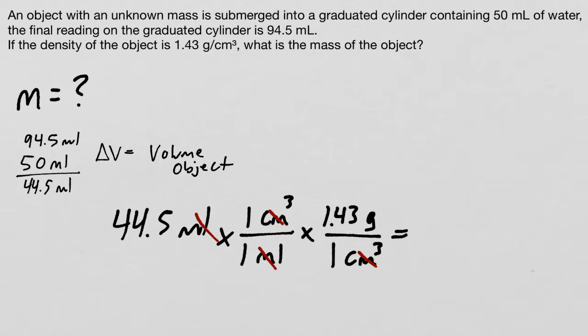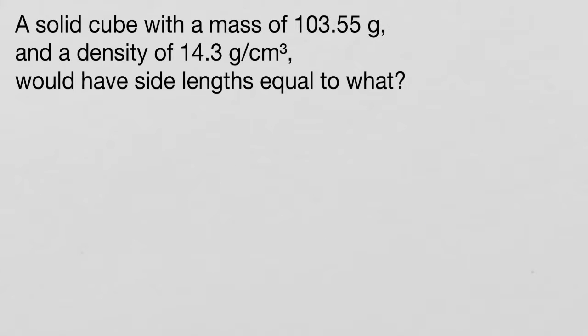The mass of the object is 63.6 grams. Let's organize what information we know. A solid cube with a mass of 103.55 grams and a density of 14.3 grams per centimeter cubed.